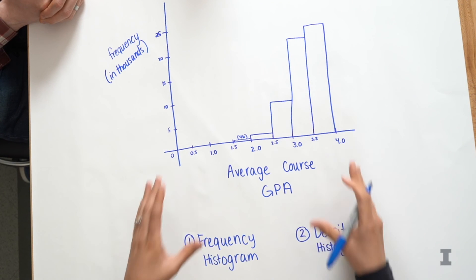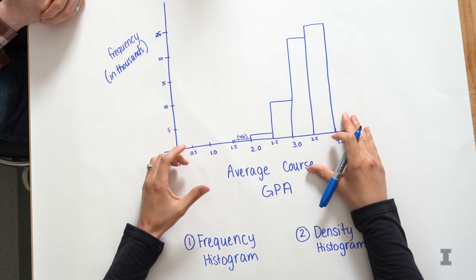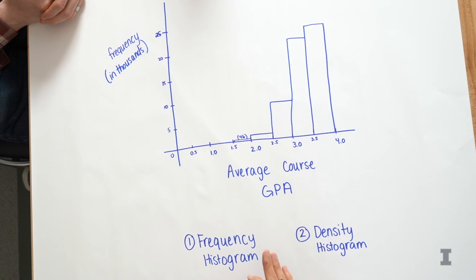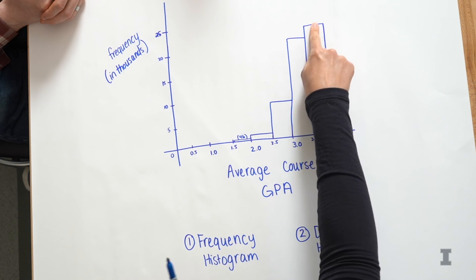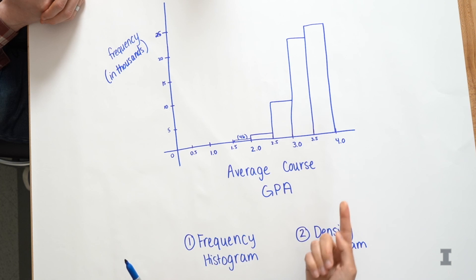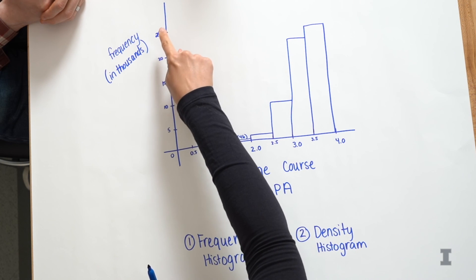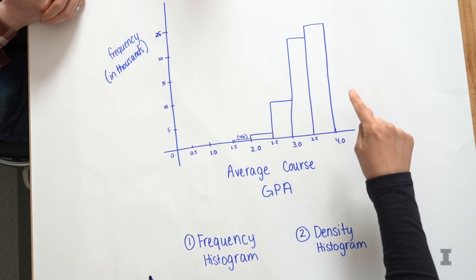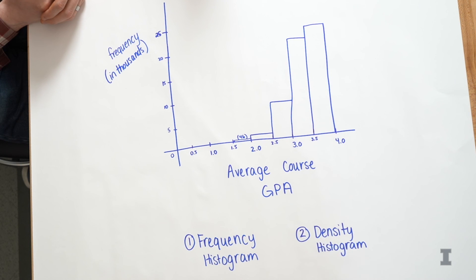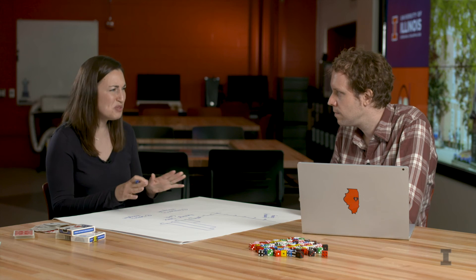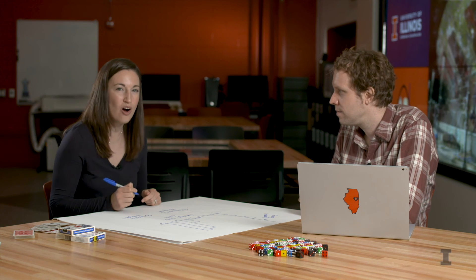And so now that we have gotten practice drawing a frequency histogram, and we know how to read it, we know that we can just look at the top of the bar and go over the y-axis and say, OK, this is the value. This is the number in thousands of courses that have these GPAs between 3.5 and 4.0. And this is a little much. This is kind of tedious, actually, drawing it out.